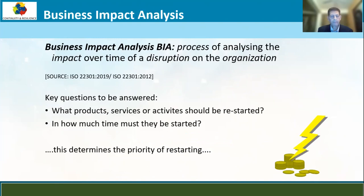So what is the BIA? Referred to often as the heart of a business continuity management program — the process of analyzing the impact over time of a disruption on the organization. I call it the Google Map. If you want to get from place A to place B, Google does a pretty good job of getting you pretty close. It may not always get you to the exact location, but often it does.